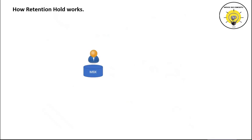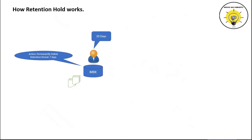To understand how retention hold works, assume a user will be on leave for the next 20 days and will not have access to their mailbox. During these 20 days the user will receive emails. If an administrator has enabled a retention policy with the action set to permanently delete and a retention period of seven days, emails older than seven days will be permanently deleted. So when the user returns from vacation, they will not be able to read emails received during their leave because those emails will have been deleted per the retention tag.